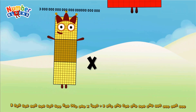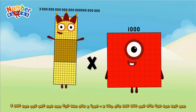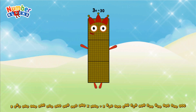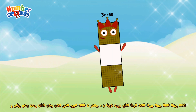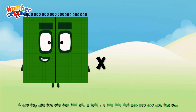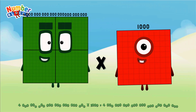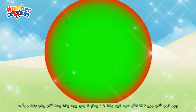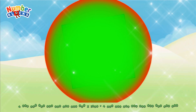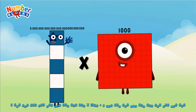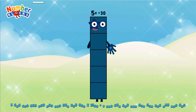Three octillion multiplied by one thousand equals three nonillion. Four octillion multiplied by one thousand equals two nonillion. Five octillion multiplied by one thousand equals five nonillion.